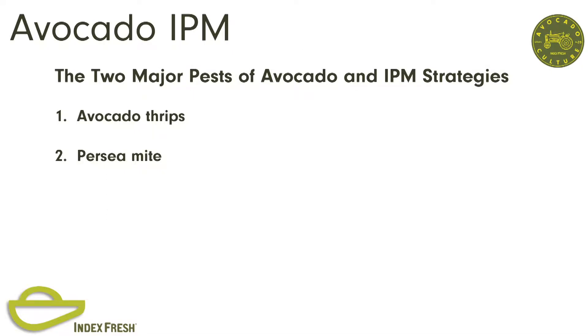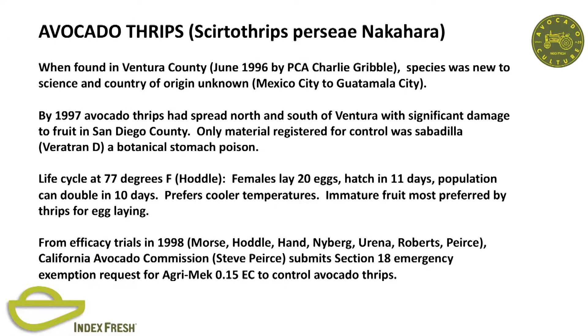The two major pests of avocados are thrips and perseamite. Avocado thrips was initially found by Charlie Gribble in June 1996—Joe Barsinas also found it at about the same time, at Irvine Ranch. The species was new to science, country of origin unknown. Within a year it spread north and south quite rapidly. There was significant damage to San Diego County—we had a new marketing program called papacatos to the food service industry because of all the scarring on the fruit.